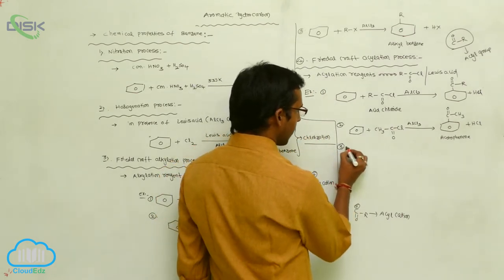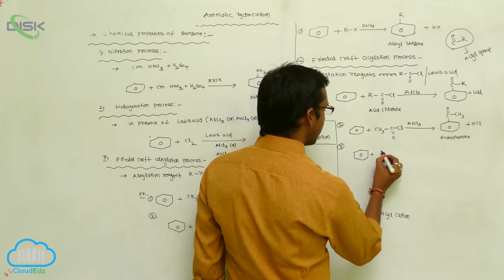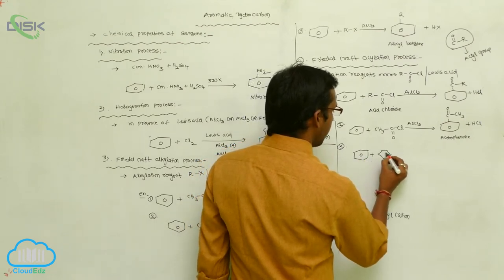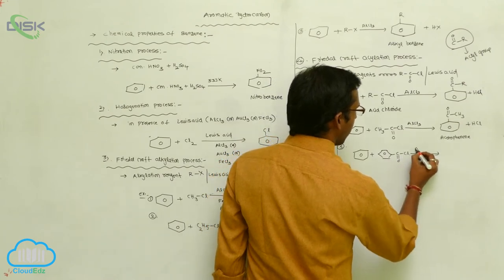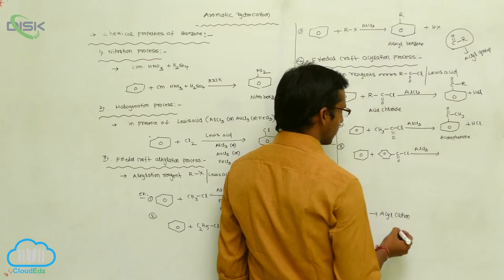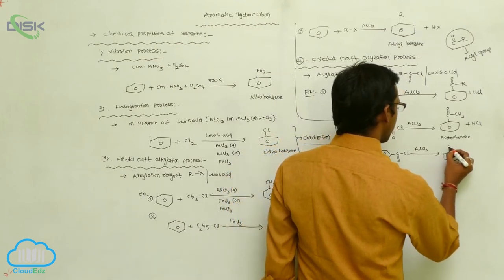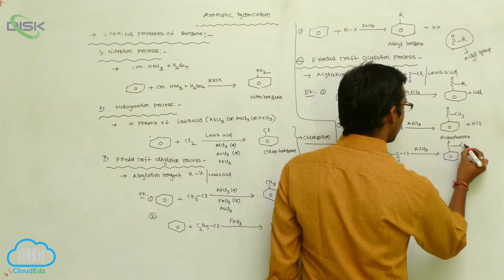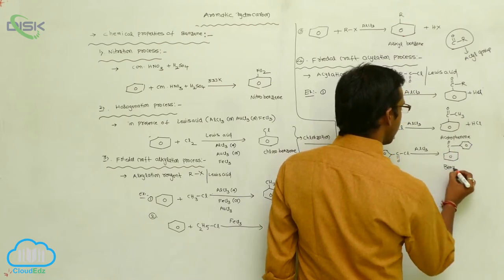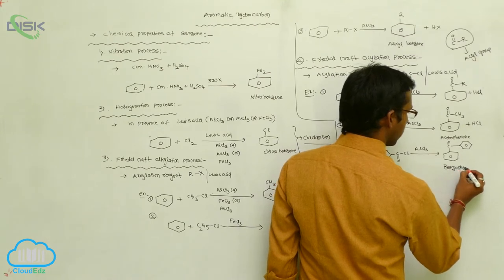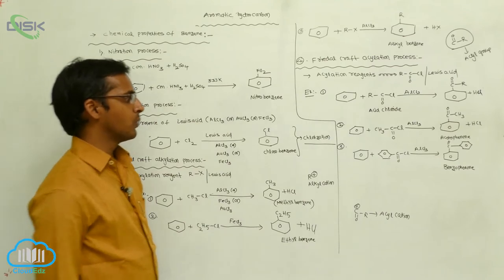Another example: benzene reacted with benzoyl chloride (C6H5C(=O)Cl) in the presence of AlCl3. The acyl group C(=O) attached to a phenyl ring gives a product called benzophenone.